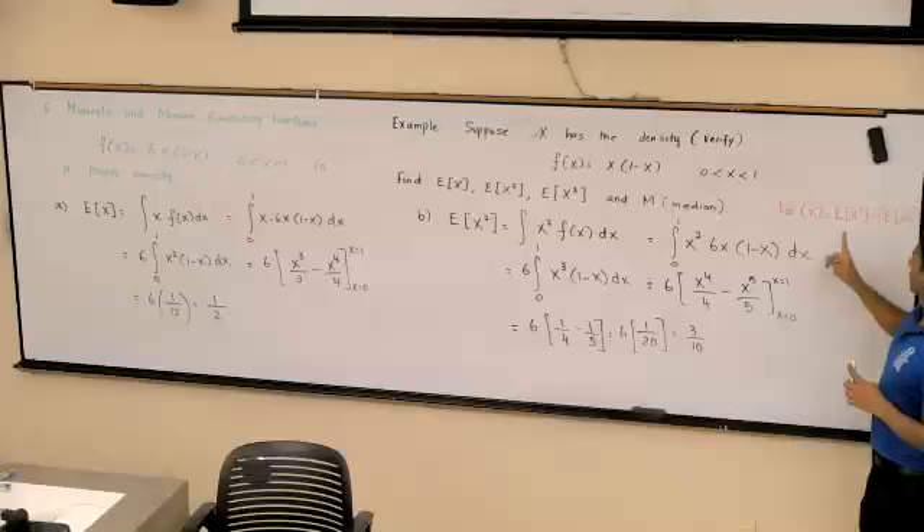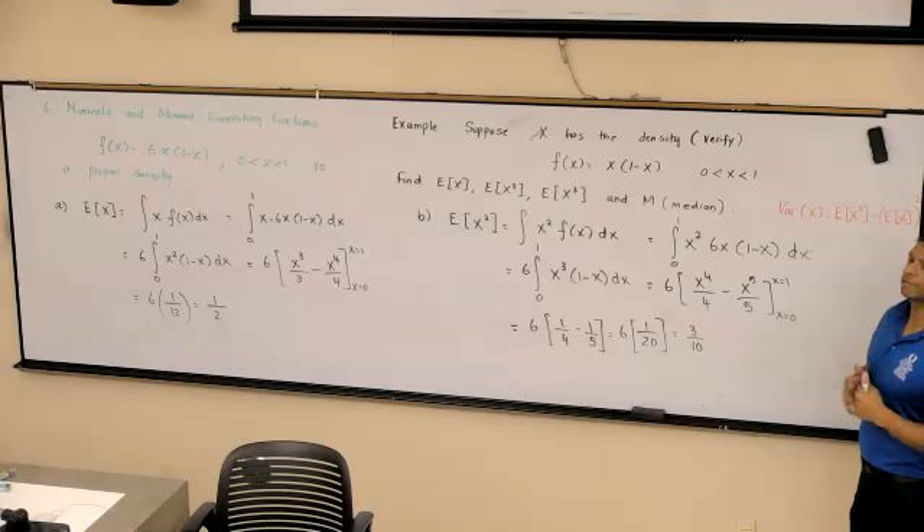That is the formula for variance, correct? So variance would equal expectation of x squared, the second moment, if that term is zero. So if we just subtracted one fourth from that, it will become the variance.